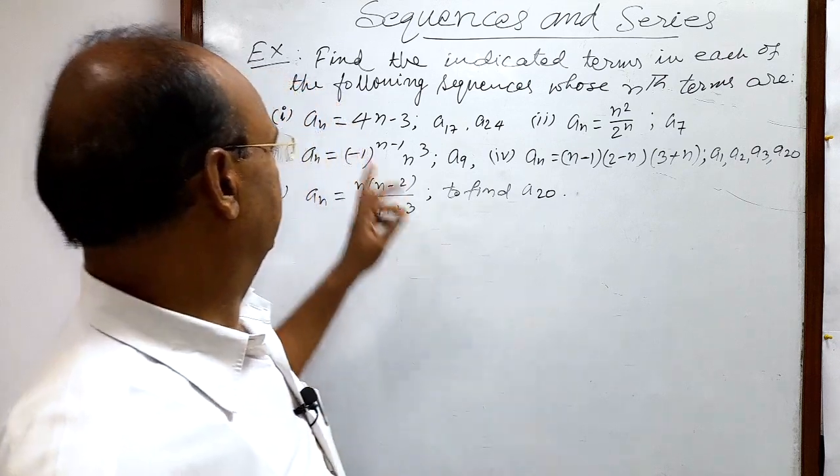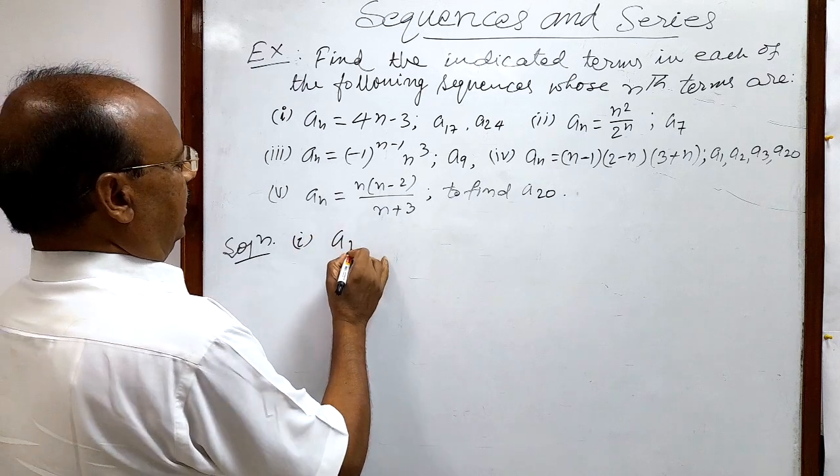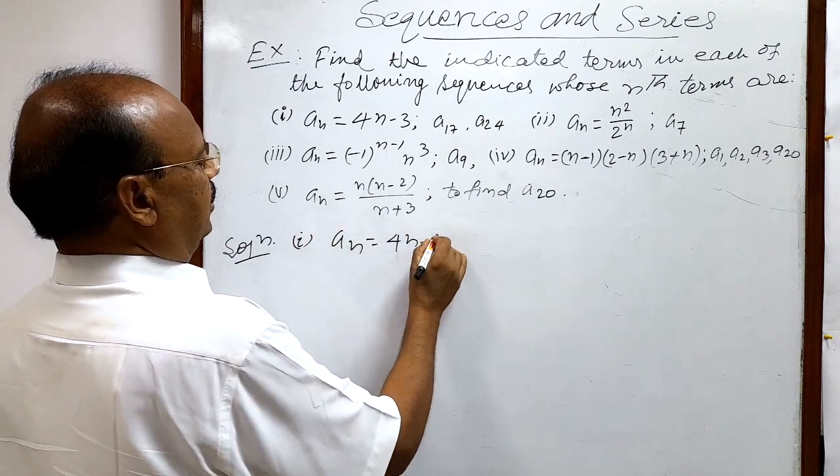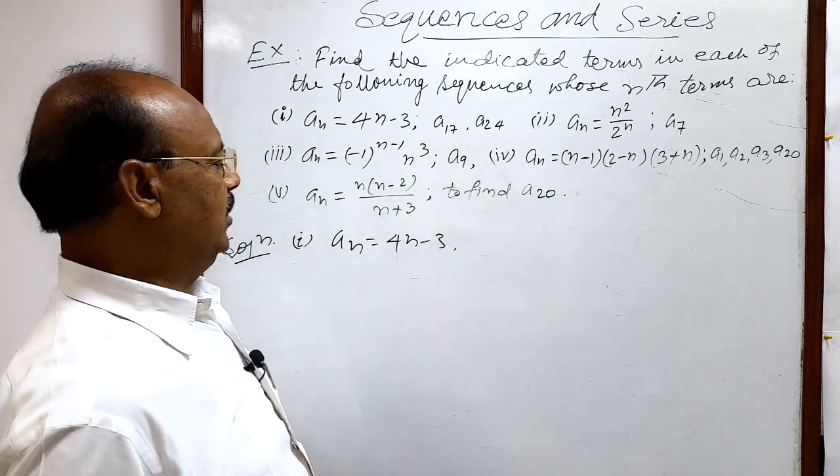So let us start with this first question. Here first question given an is equal to 4n minus 3. We have to find out a17 and a24.